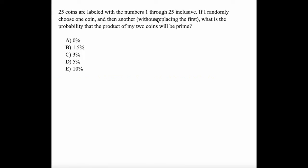25 coins are labeled with the numbers 1 through 25 inclusive, meaning including 1 and 25. If I randomly choose one coin and then another without replacing the first, what is the probability that the product of my two coins will be prime?